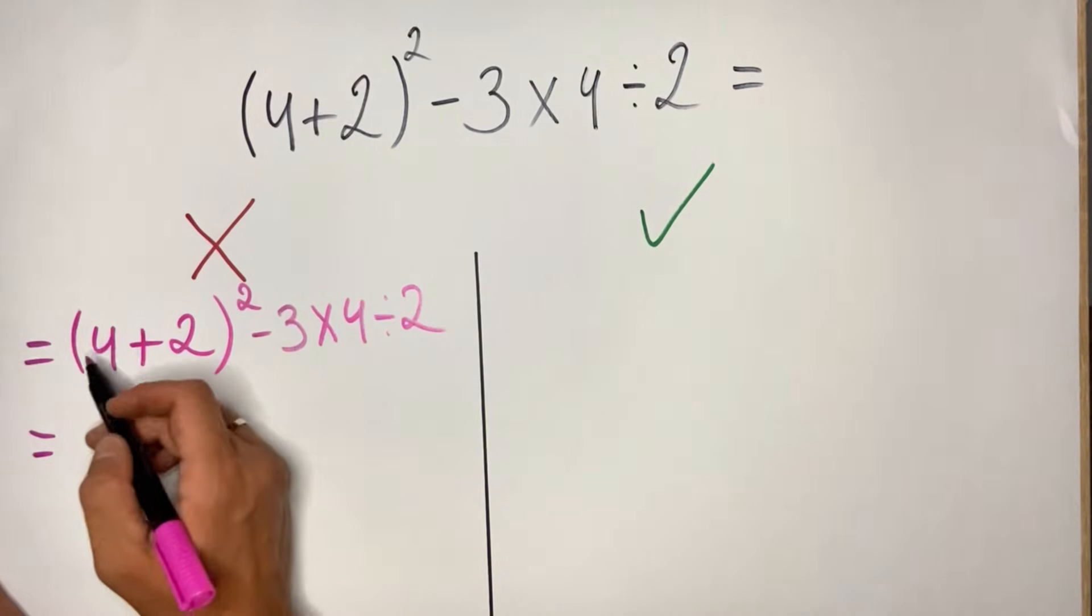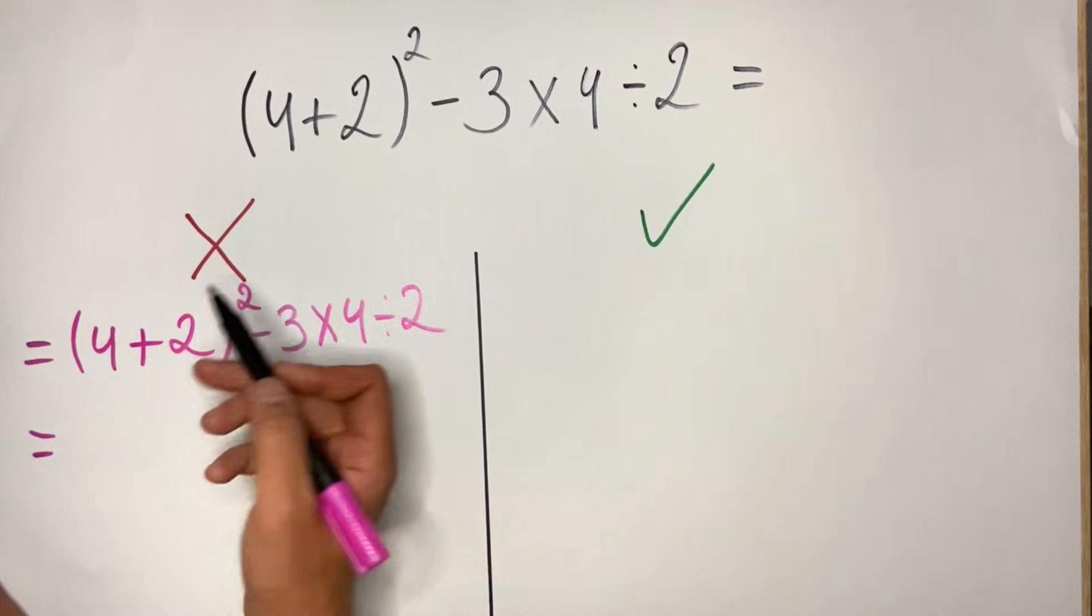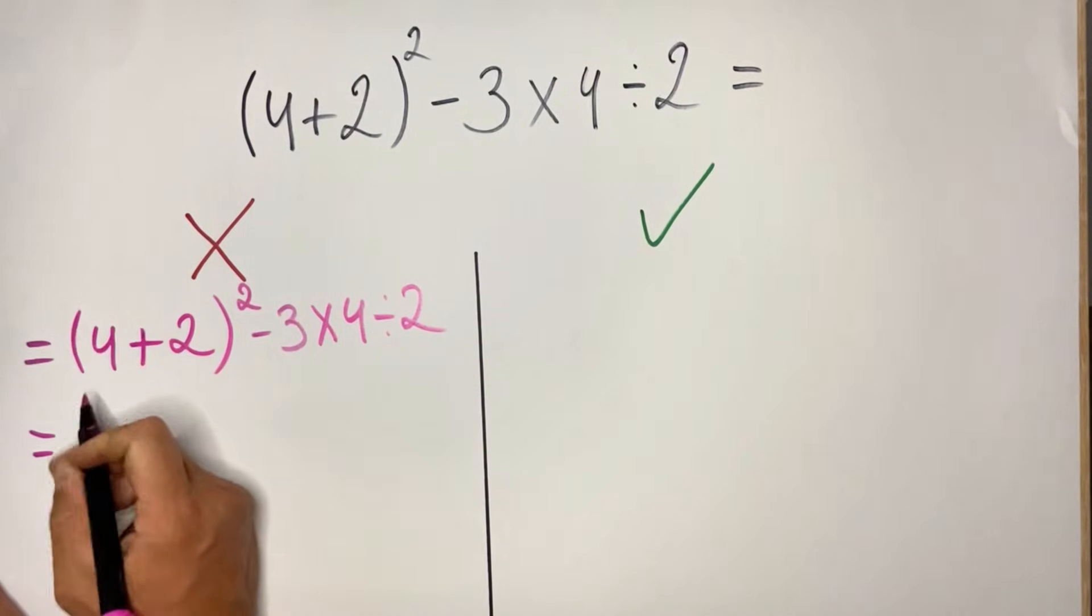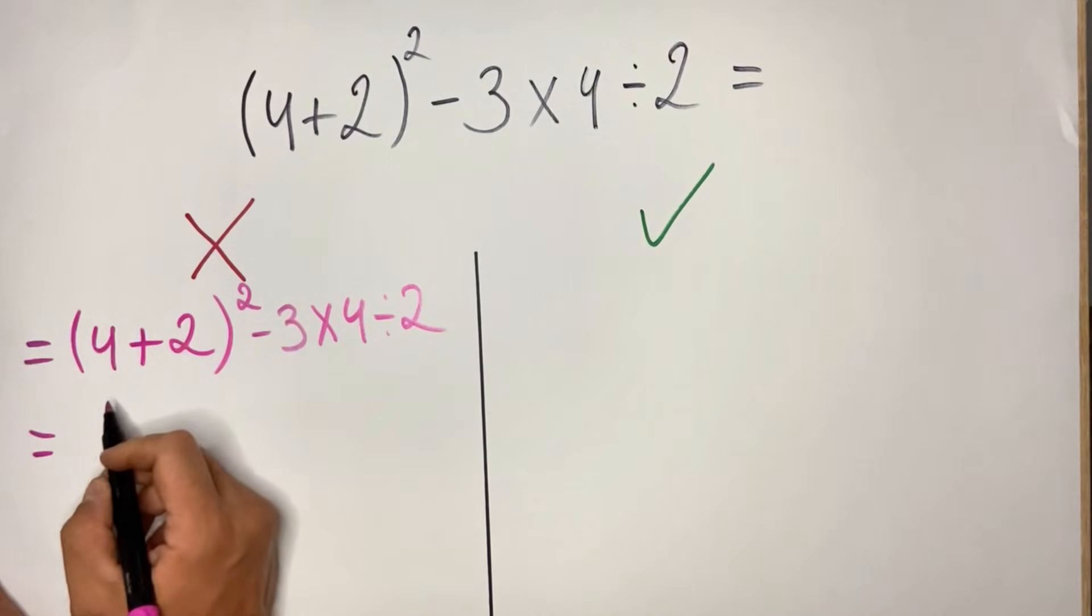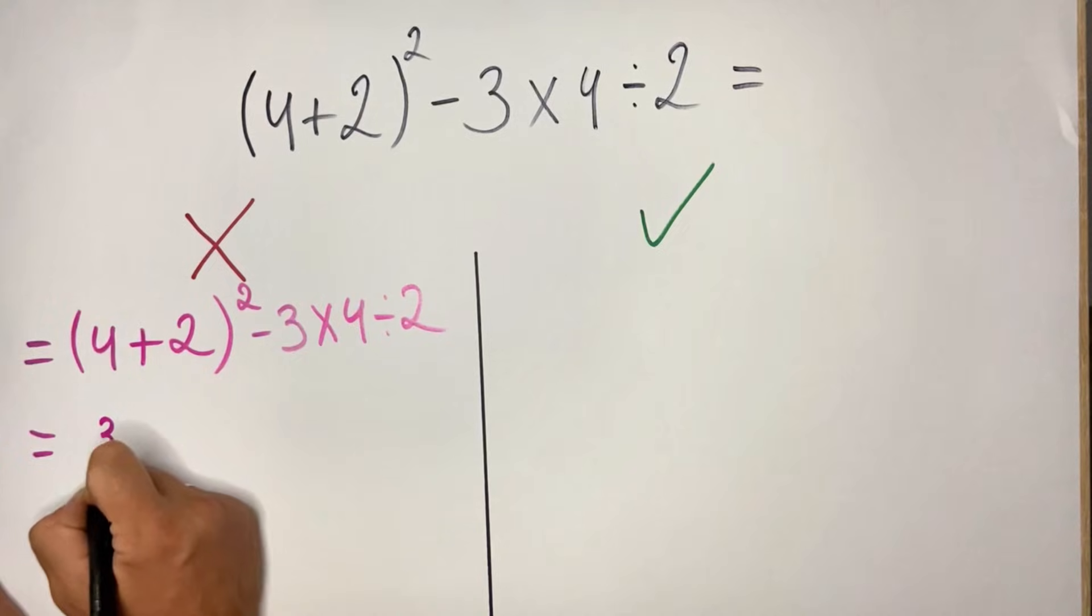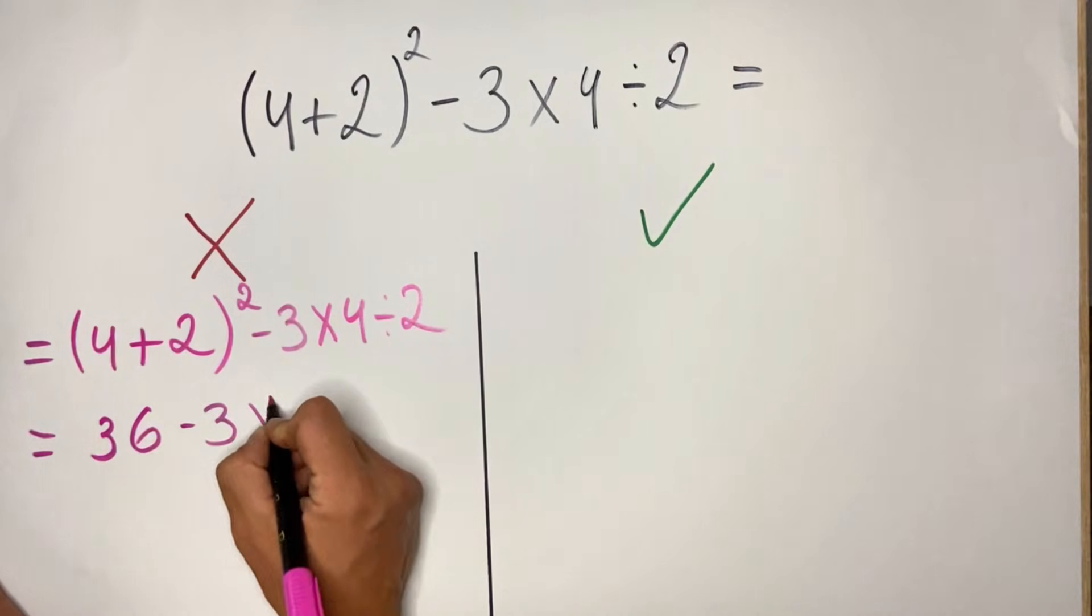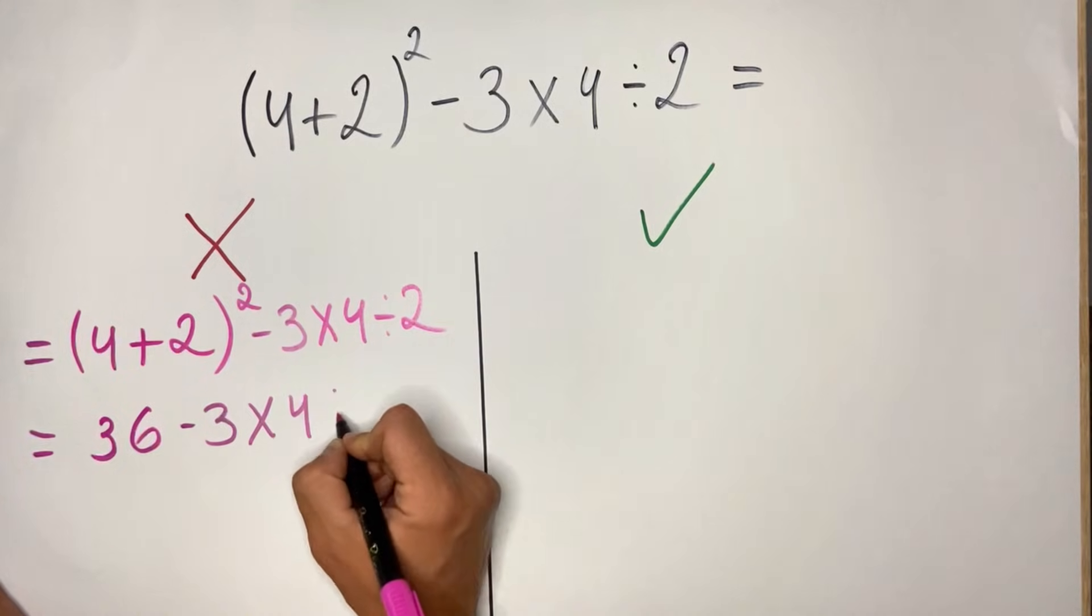On the left side, they cannot make any mistakes unless they do calculation mistakes. So we have here 4 plus 2, which is 6, squared, which is 36.